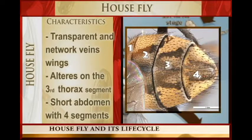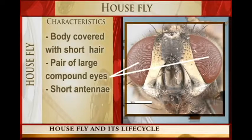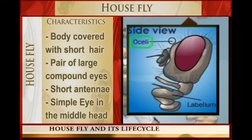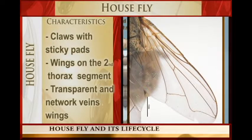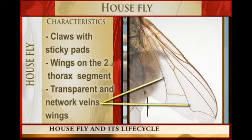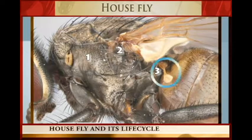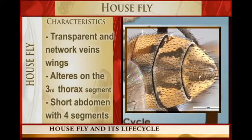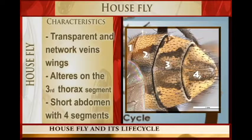If you look at the house fly, you will see that it has antennae, compound eyes, a simple eye in the middle of the head towards the thorax, transparent wings with a network of veins, halteres used for balancing, and an abdomen which is divided into four segments and is very short. Those are some of the characteristics of the house fly.